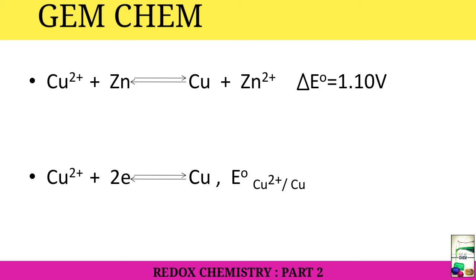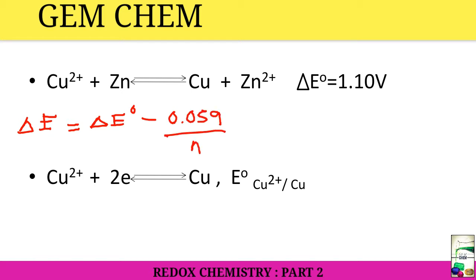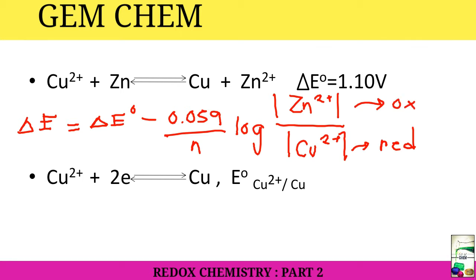First, we will see how to apply the Nernst equation in different redox reactions. For the first one, we know that the Nernst equation is E. The couple we should write - since two components are present, copper 2+ and Zn, it is ΔE = ΔE⁰ minus 0.059 divided by the number of electron transfer N, log [Zn²⁺]/[Cu²⁺]. The one being reduced is here and the one being oxidized is placed here.